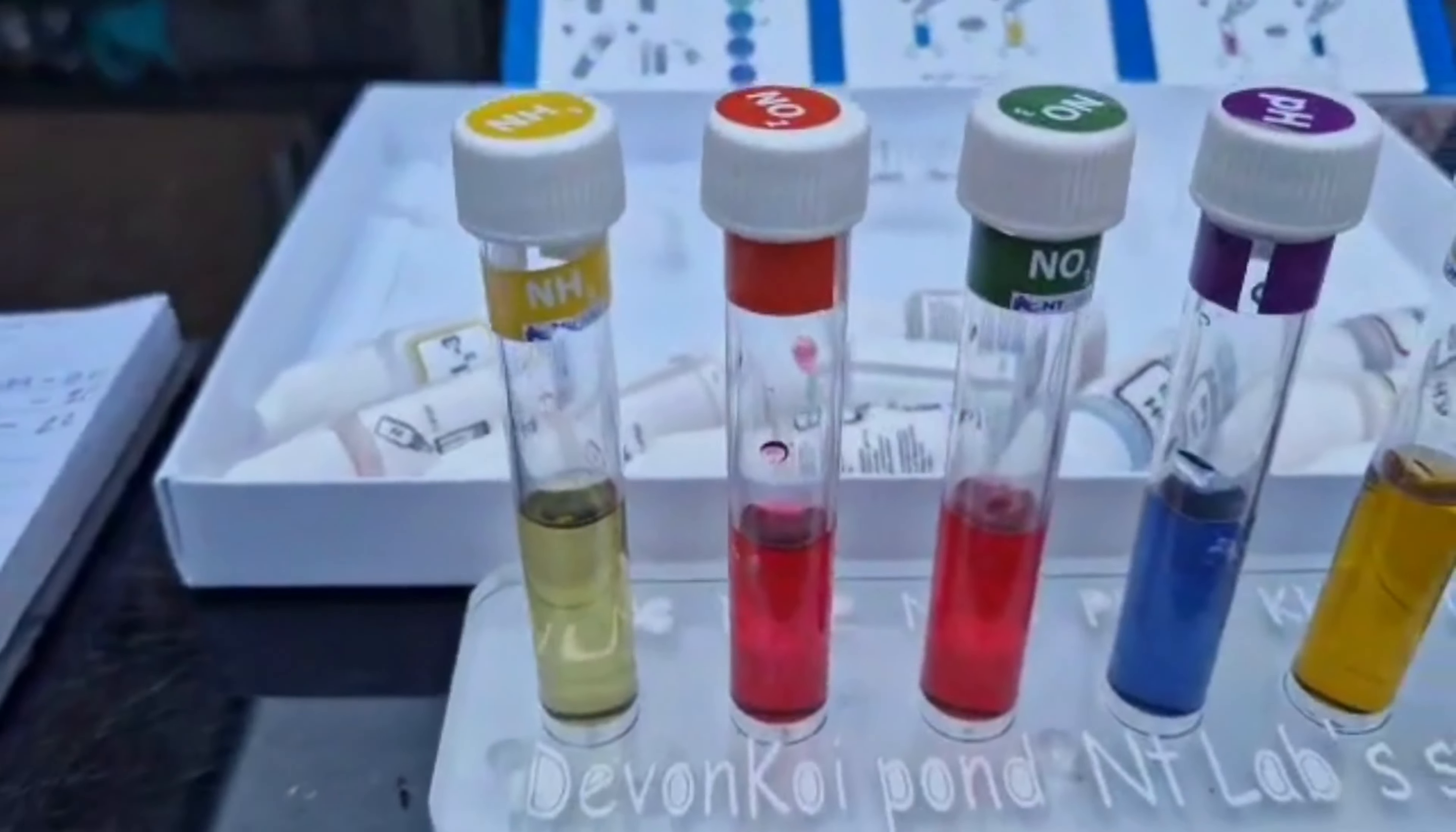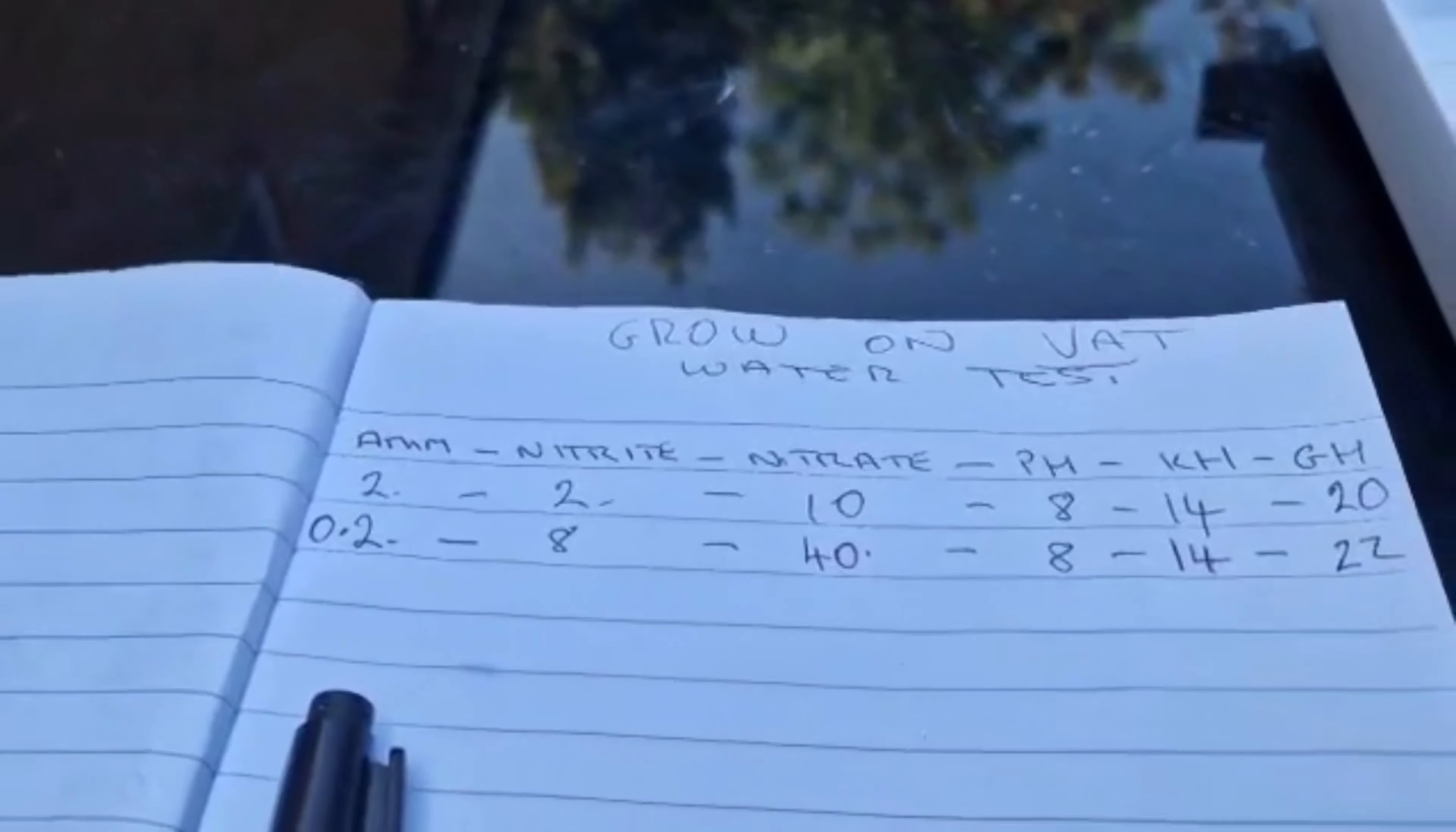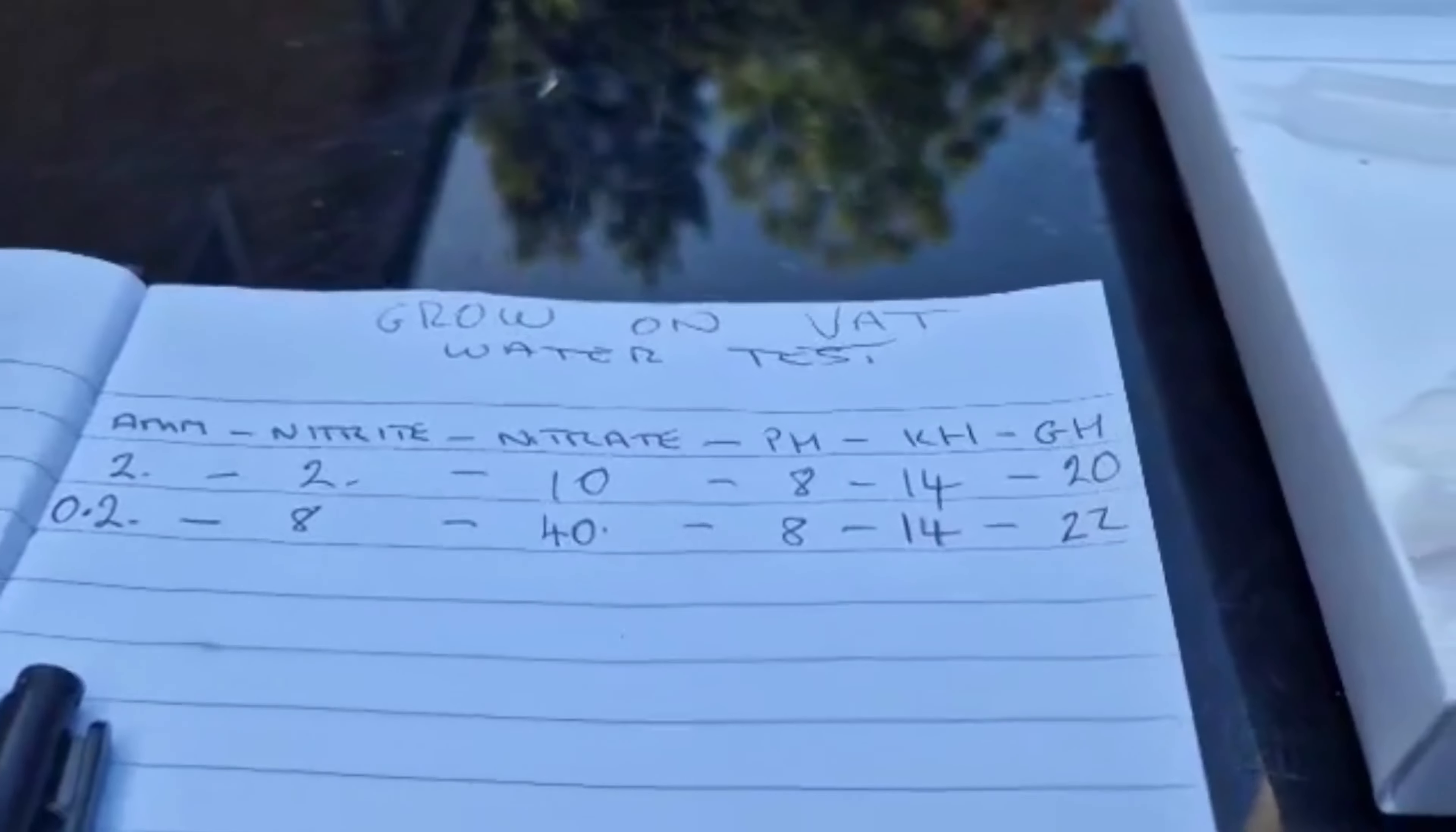The ammonia has come down to 0.2, but nitrite has gone up. pH stable. KH is okay and GH.